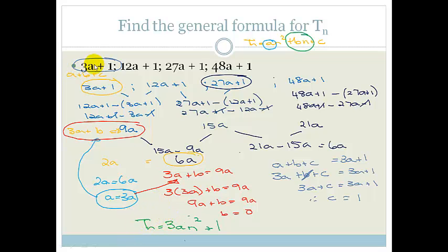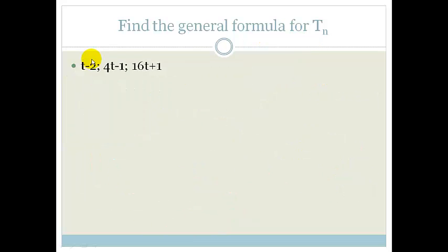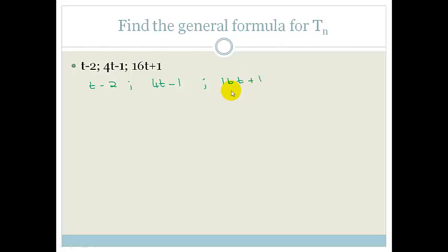If you find this tricky in exams because the letter in the sequence happens to be the same as your formula coefficient, I would change it to x until you get the final answer. Let's do one more — this one uses t instead of a's, so you won't be confused. We've got t minus 2, 4t minus 1, and 16t plus 1.